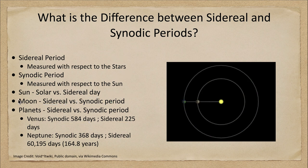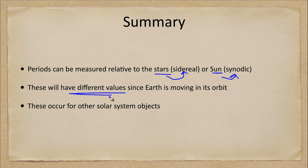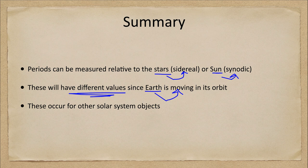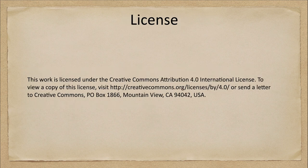So let's finish up with our summary. We've looked at how we can measure periods relative to the stars — the sidereal period — or relative to the sun — the synodic period. These will have different values because Earth is moving in its orbit, as well as the planet is moving. These occur for various objects in the solar system. The sidereal period is how long they actually take to go around the sun one time, while the synodic period is how long it takes to get back to the same Earth-sun-planet orientation. That concludes this discussion on sidereal and synodic periods. We'll be back again next time for another special topic in astronomy — have a great day everyone, and I will see you in class.